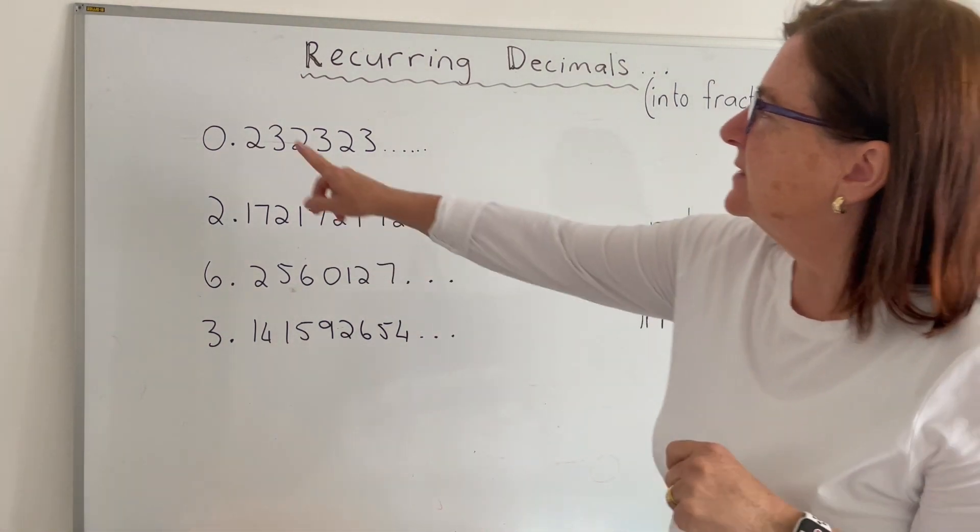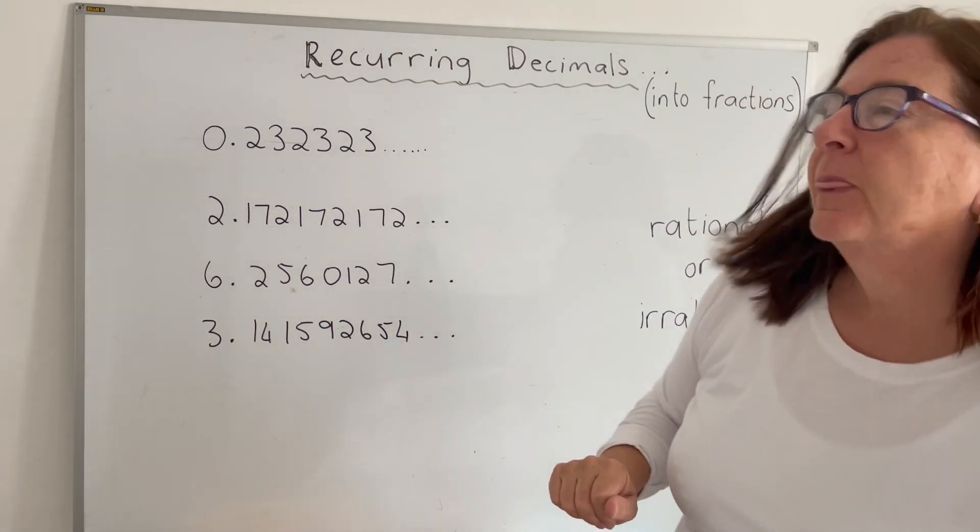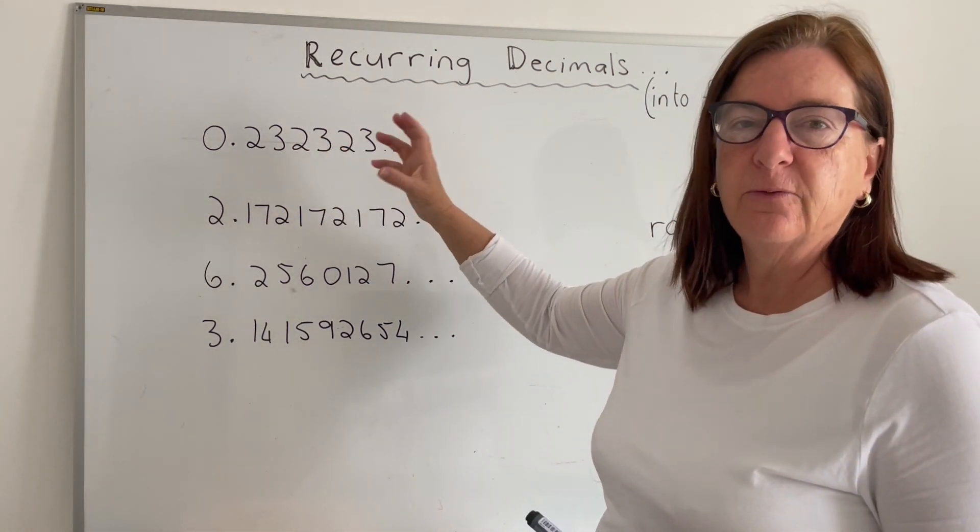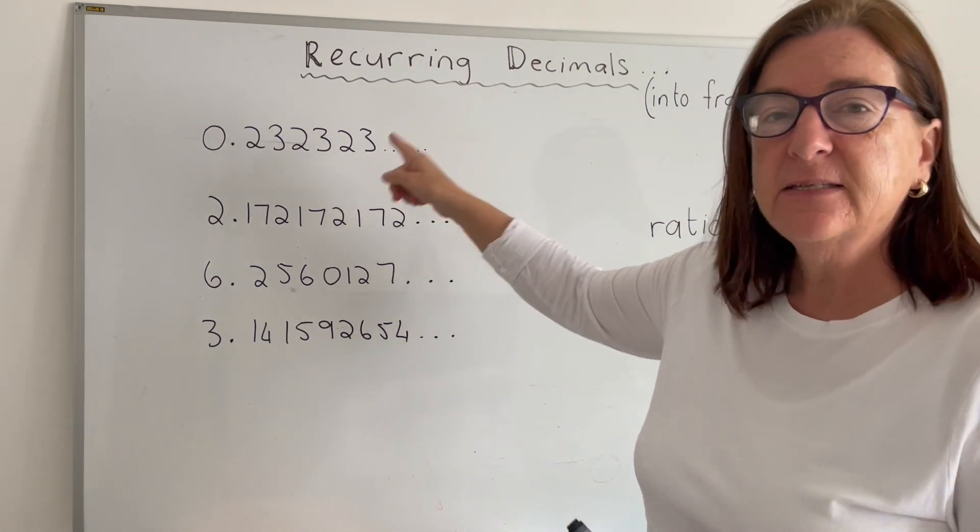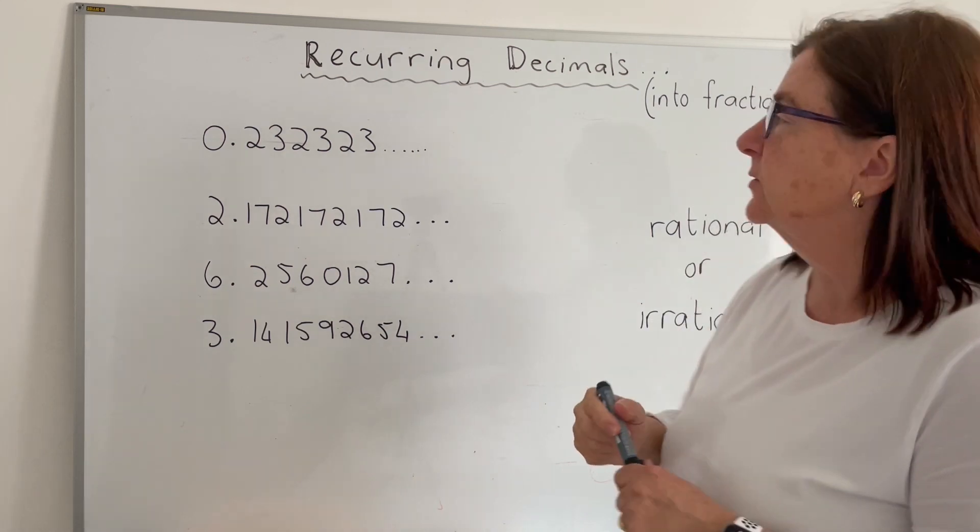Let's look at some examples here. The first one I've got is 0.232323. Now that would be recurring because the 23 repeats itself. Therefore recurring if there is a pattern. And if there is a recurring decimal it can be converted into a fraction.